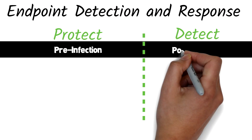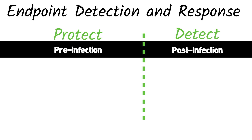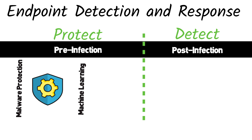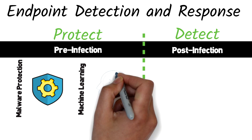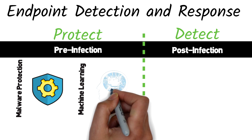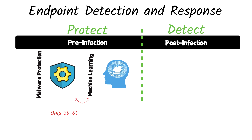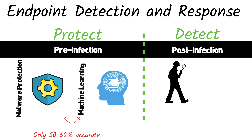Let's start by breaking down an infected endpoint into two stages: pre-infection and post-infection. Pre-infection is where your traditional antivirus tools generally live. This might use tools like virus signatures and machine learning to prevent known malware from ever executing on the machine. However, we as cybersecurity professionals know that this is not very effective. Even the best antivirus engines are only known to block between 50 to 60% of the real-world threats that we see on a daily basis.